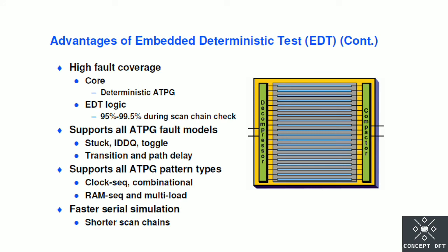Two more advantages of embedded deterministic test: the first is high fault coverage. Another advantage is that it supports all ATPG fault models — such as IDDQ, toggle, path delay — all are supported in EDT. It also supports all ATPG pattern types like block sequential, combinational, RAM sequential, and multi-load. One more advantage is faster serial simulation time.